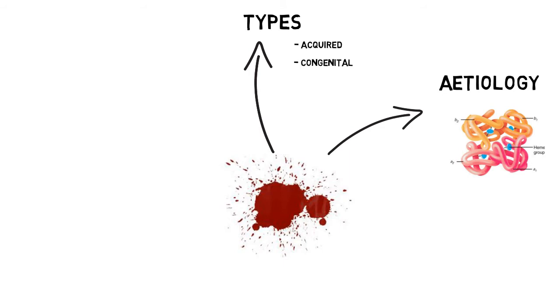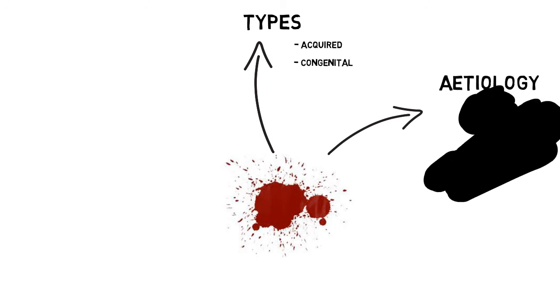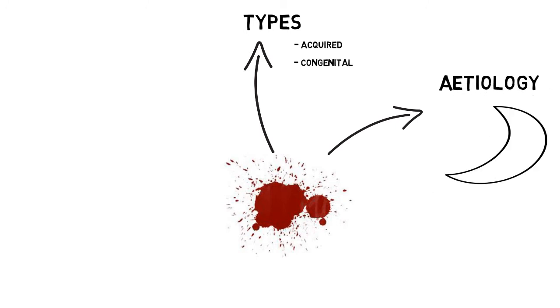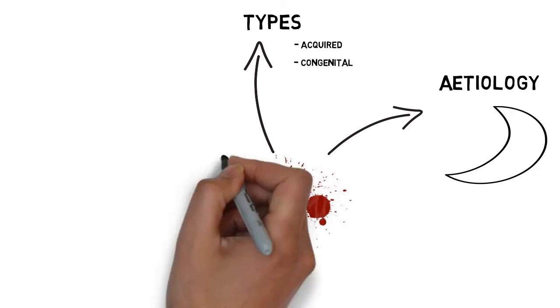Whereas in sickle cell anemia, there are mutations in the beta chain, which causes the red blood cell to adopt its well-known phenotypical shape — the sickle shape.